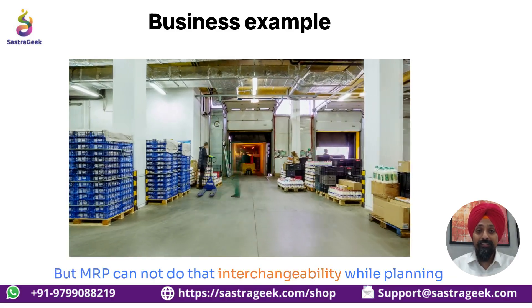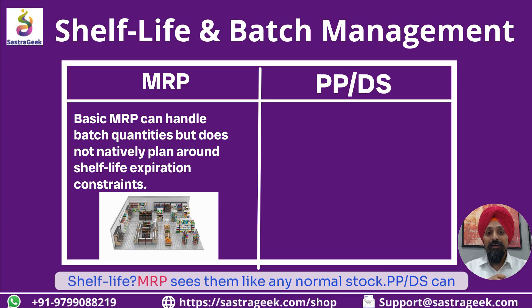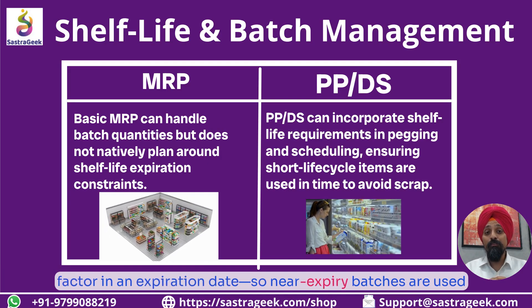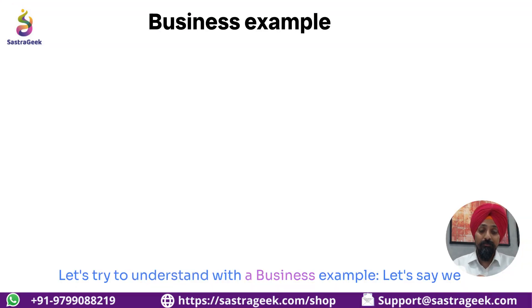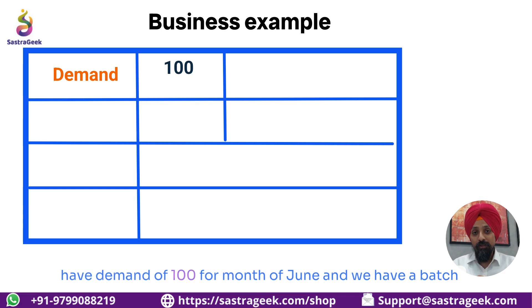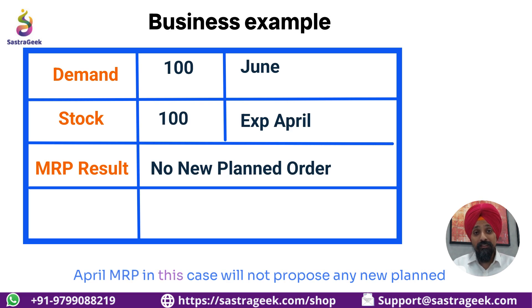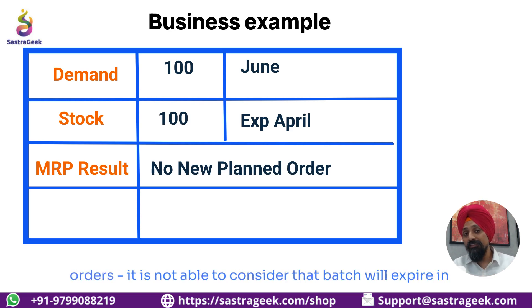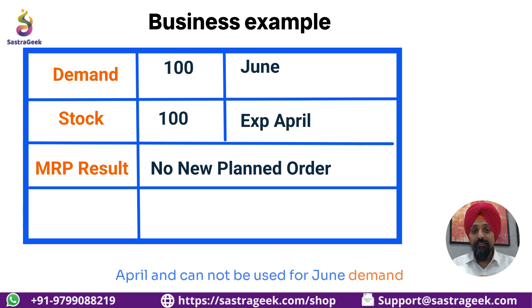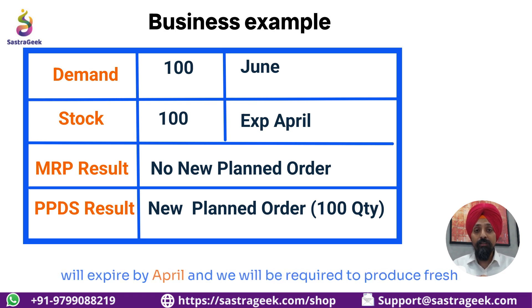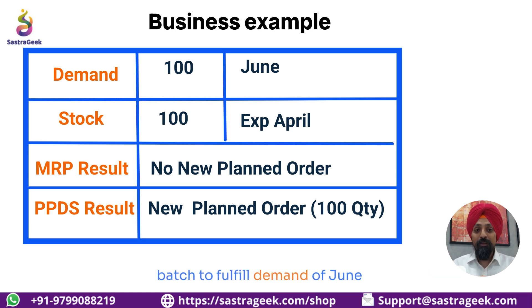What about shelf life? MRP sees items like any normal stock. PPDS can factor in an expiration date, so near-expiry batches are used up first. For example, if we have demand of 100 units for June, and we have a batch in stock with quantity 100 but an expiry date of April, MRP will not propose any new planned orders — it is not able to consider that the batch will expire in April and cannot be used for June demand. However, PPDS will consider that the stock will expire in April and that a fresh batch needs to be produced to fulfill the June demand.